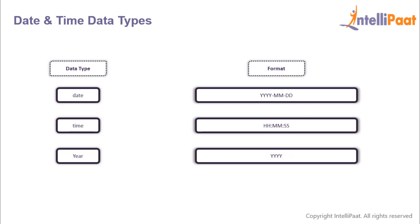Then we have the date and time data types. We'll start with the DATE data type, which helps us to specify the date in a standard format. Let's say we want to store the date 2nd January 2019. First we give the year, which would be 2019; then we specify the month, which would be 01; and finally we specify the day, which is 02.